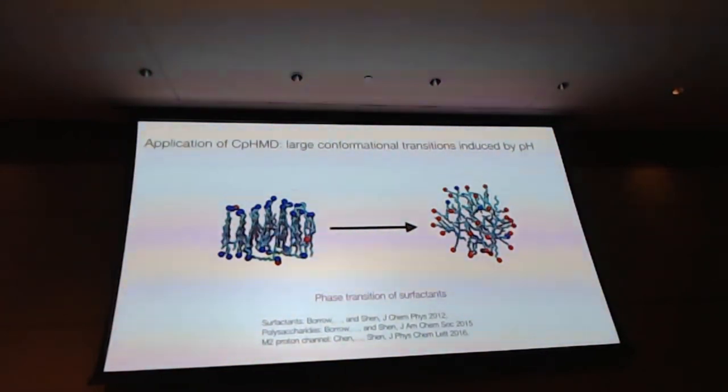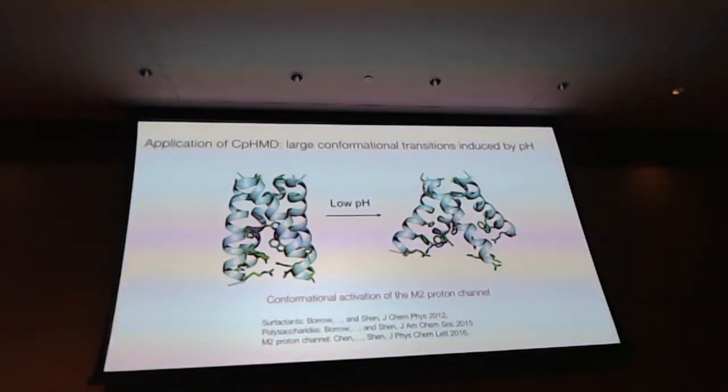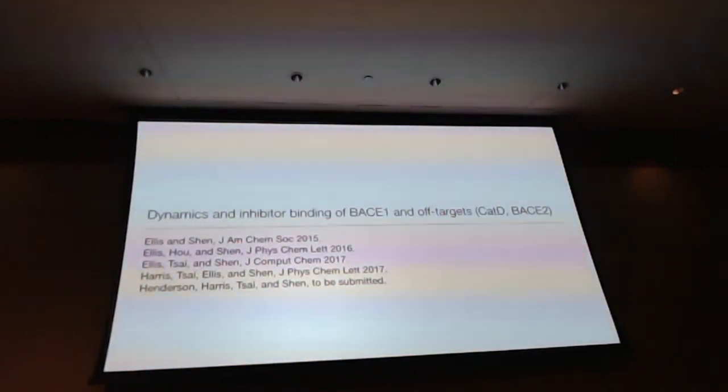And with constant pH-MD, we can now ask questions about what's the mechanism of a large conformational transition driven by the pH change. So shown here is an example of how we can study a phase transition between a bilayer and a surfactant micelle using constant pH-MD. And we can also study the self-assembly problem in a pH-dependent manner. And finally, many people are interested in how transporters and channels are driven by the pH gradient across the membrane. And we can now begin to understand the problem. And in a straightforward manner, we can directly sample the large conformational transition between the closed state and open state, just by using constant pH-MD. But today, I'm going to focus on the theme of this symposium, which is how to incorporate pH into the binding free energy calculations.